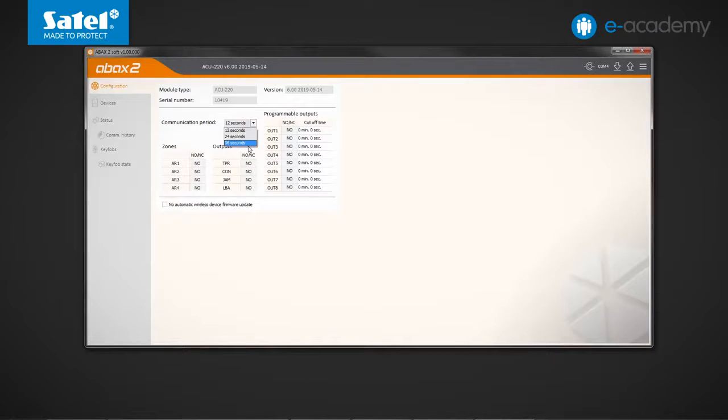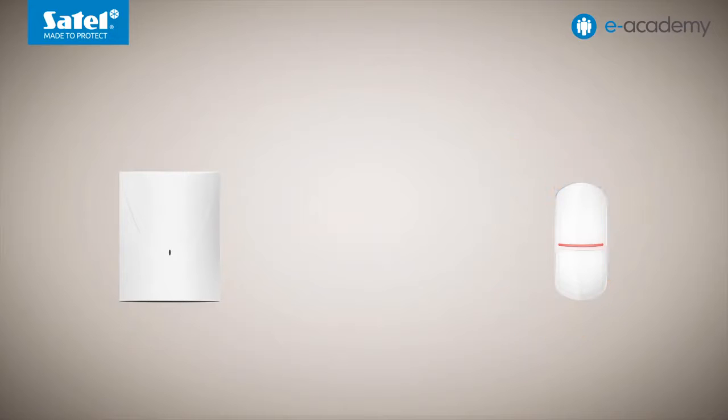In this tab you can set the communication period, which is the time interval at which wireless devices are to communicate with the controller. You can choose an interval of 12, 24, or 36 seconds. During periodic communication, wireless devices send information about their status to the controller, for example about violations, battery status, etc. In response, various commands are sent to the devices, for example relating to the changing sensitivity settings or operating mode of the detectors.